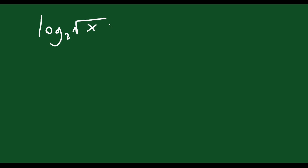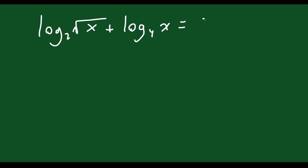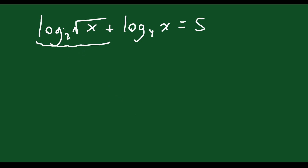Let's do another one. We have to solve for x, and the question is log base 2 of square root x plus log base 4 of x is equal to 5. It looks like you want to use the product rule — that would be the instinct — but unfortunately you can't, because these bases are different. Bases need to be the same to use the product rule, so we can't do that.